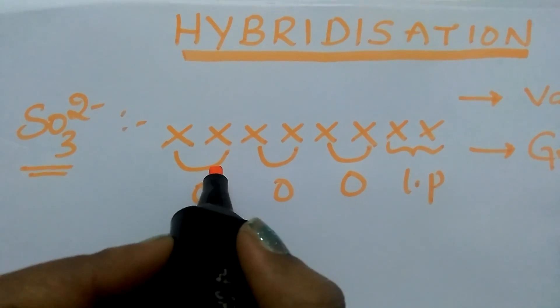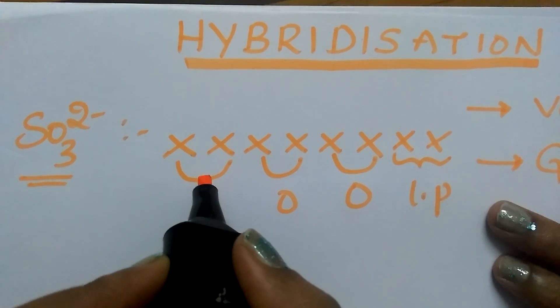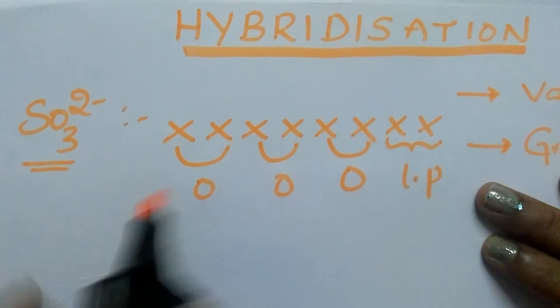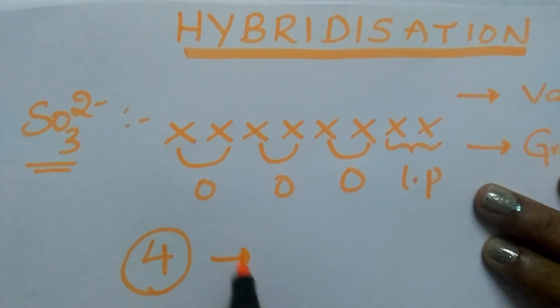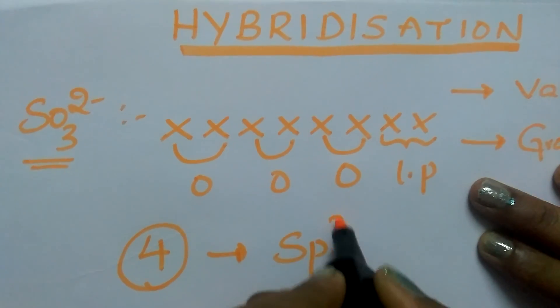After that, count the total electron pairs: 1, 2, 3, 4. 4 electron pairs means hybridization is sp3.